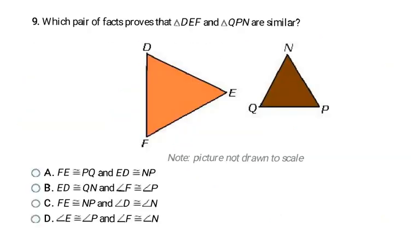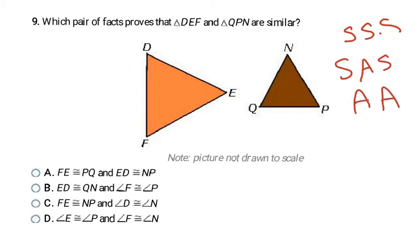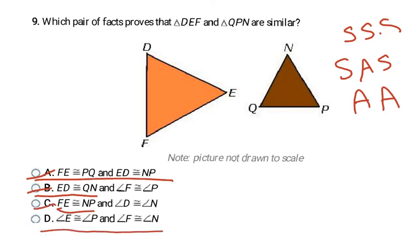The final problem asks which pair of facts proves triangles DEF and QPN are similar. Knowing two sides are congruent doesn't help with similarity — sides must be proportional. Knowing two angles are congruent satisfies the AA similarity shortcut. The answer is D. Thank you for joining us today and I hope you learned something new.